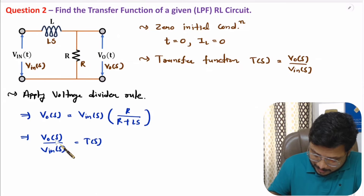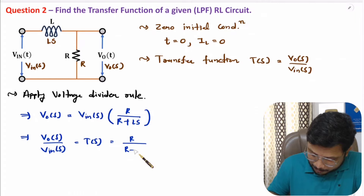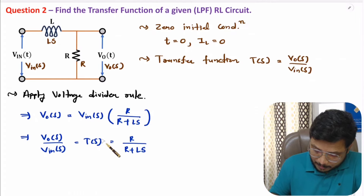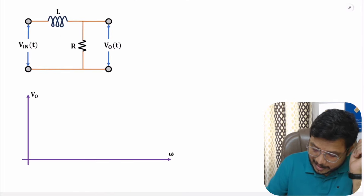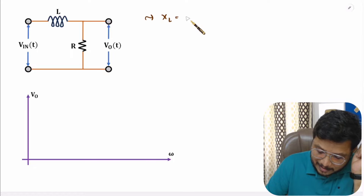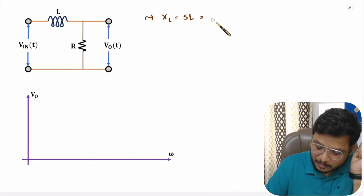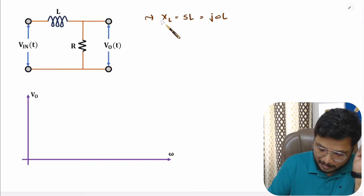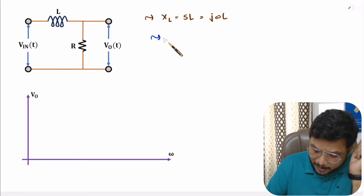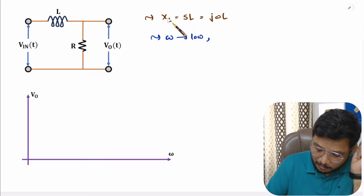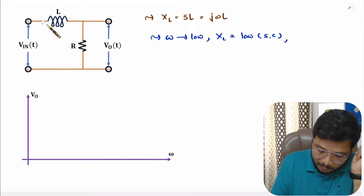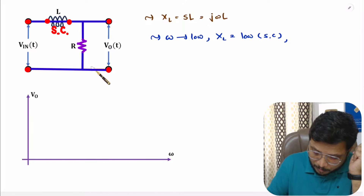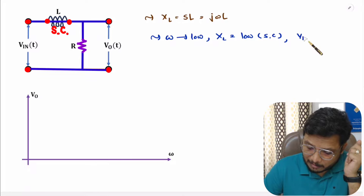The transfer function T(s) = Vo(s) / Vin(s) = R / (R + Ls). This is the transfer function of the low pass filter. The inductor has impedance XL = jωL. At lower values of ω, XL is low, meaning the inductor acts as a short circuit, so input passes through toward the output.